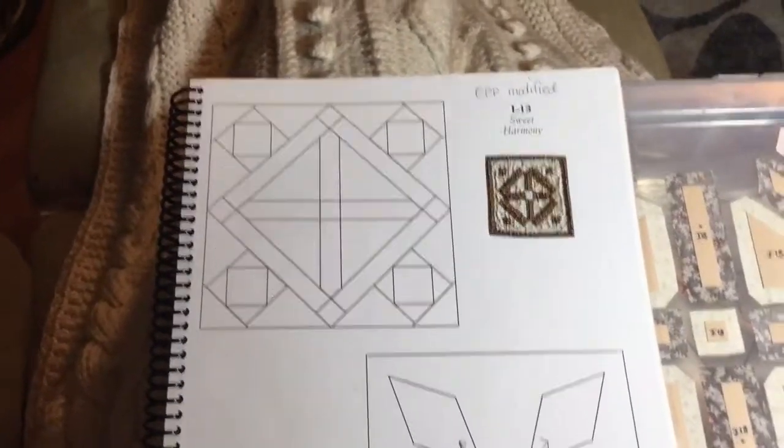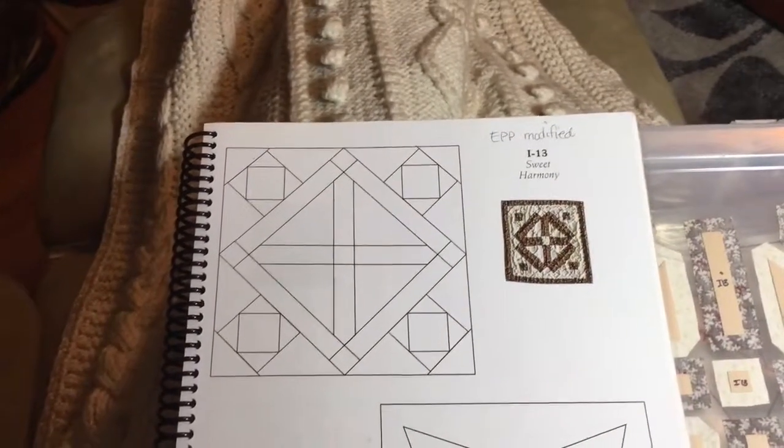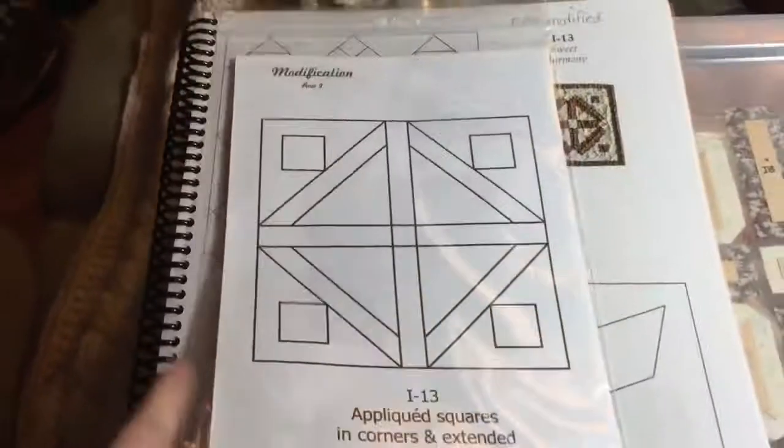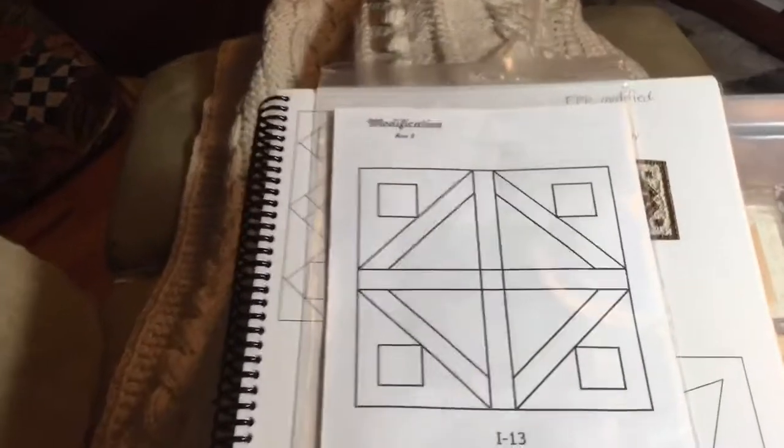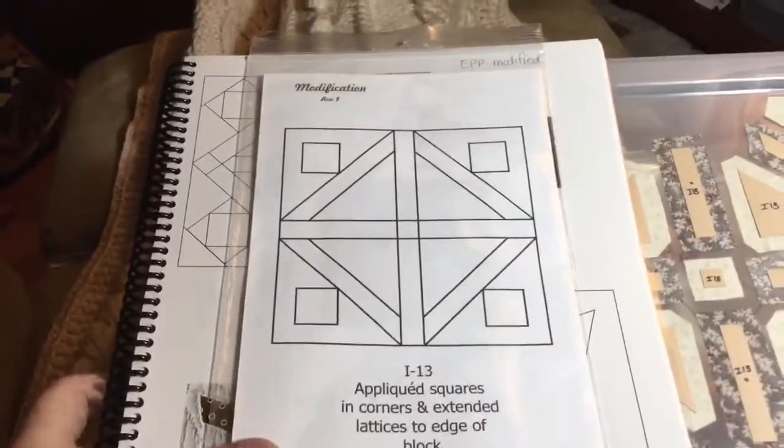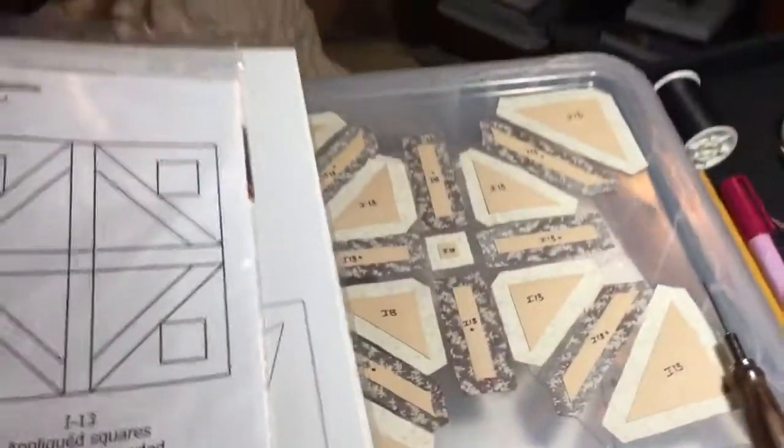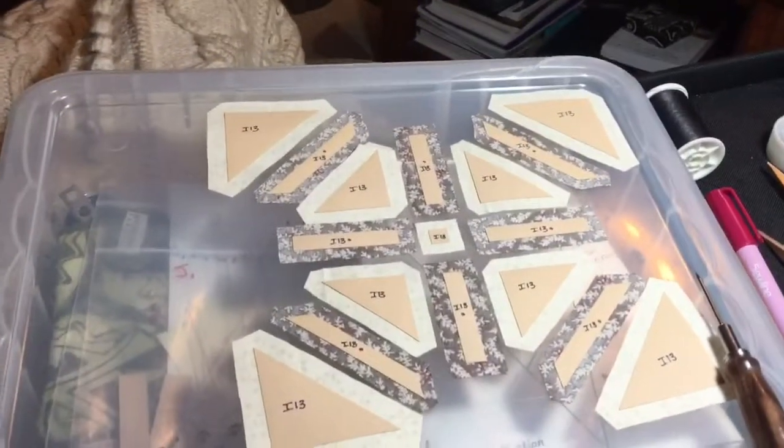Now we are at the end of the I row with block I-13, and this is an EPP modified block. So I'm going to get my book out and this is how it's been modified. I'm going to refer to this when I'm assembling my block.